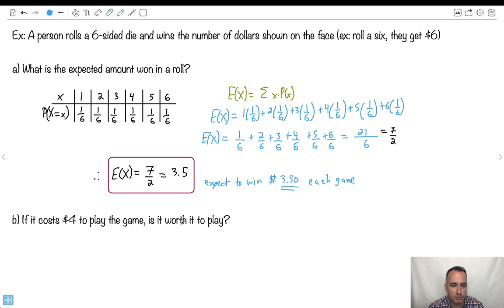Now, if it costs $4 to play the game, is it worth it to play? Well, no. Why not? Cost more to play than your winnings, or at least your expected winnings. So that's why you probably shouldn't play. By the way, this is how casinos work. They always make sure that they've calculated the expected earnings and make sure that they charge you more on average. That's why casinos make money.